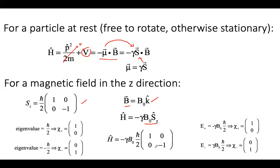The Hamiltonian operator is gamma B₀ Sz, which carries eigenvalues ±ℏ/2 with the diagonal matrix. The eigenvectors are the spin-up (1,0) and spin-down (0,1) spinors. The energy eigenvalues are ±γB₀ℏ/2 — the two possible energies of this particle spinning in a magnetic field in the Z direction.